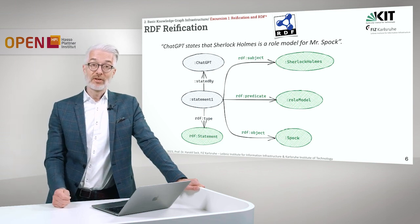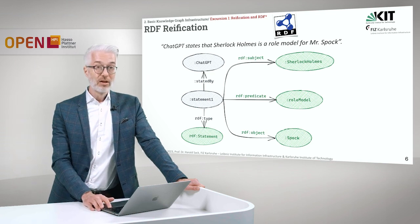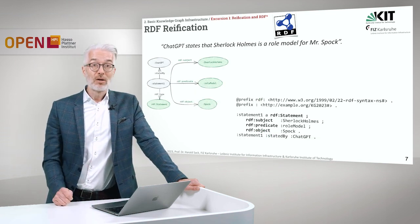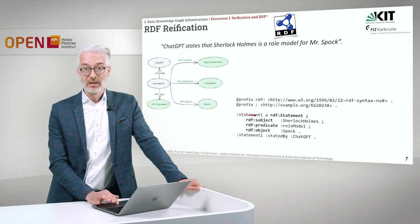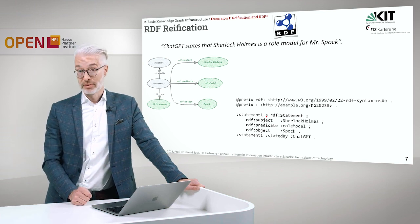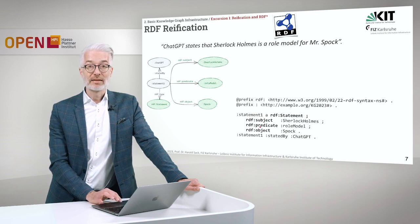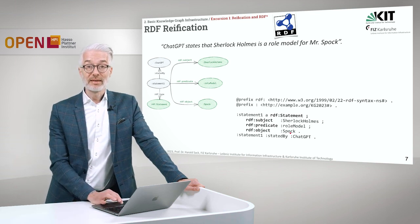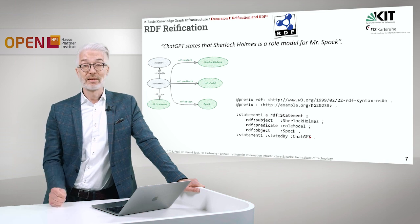Quite simple so far, but you can see that if I want to make statements about statements, the graph gets more complex when encoded via reification. In Turtle, Statement 1 is declared as an RDF statement. Then with a semicolon, Statement 1 has subject Sherlock Holmes, Statement 1 has predicate role model, and Statement 1 has object Spock. And then this statement has been stated by ChatGPT. That's our reification.